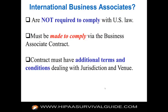What about international business associates? International business associates are not obviously required to comply with U.S. law, but you can't outsource your liability under the regulation. An international business associate must be made to comply with U.S. law via the business associate contract. If you're sharing PHI internationally, you're going to have to have contracts with these business associates and make them aware that they are on the hook for complying with U.S. law. The contract must have additional terms and conditions, such as jurisdiction and venue, for an international business associate.